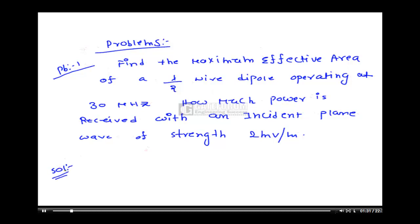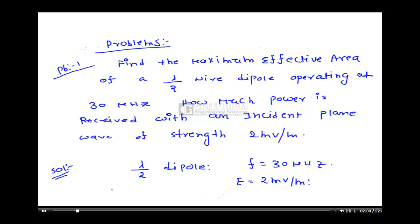The solution: given a lambda by 2 dipole operating at 30 megahertz, so F is equal to 30 megahertz. E is given as 2 millivolt per meter. The unknowns to calculate are effective aperture and power received. Try to relate the unknown things in terms of known things.